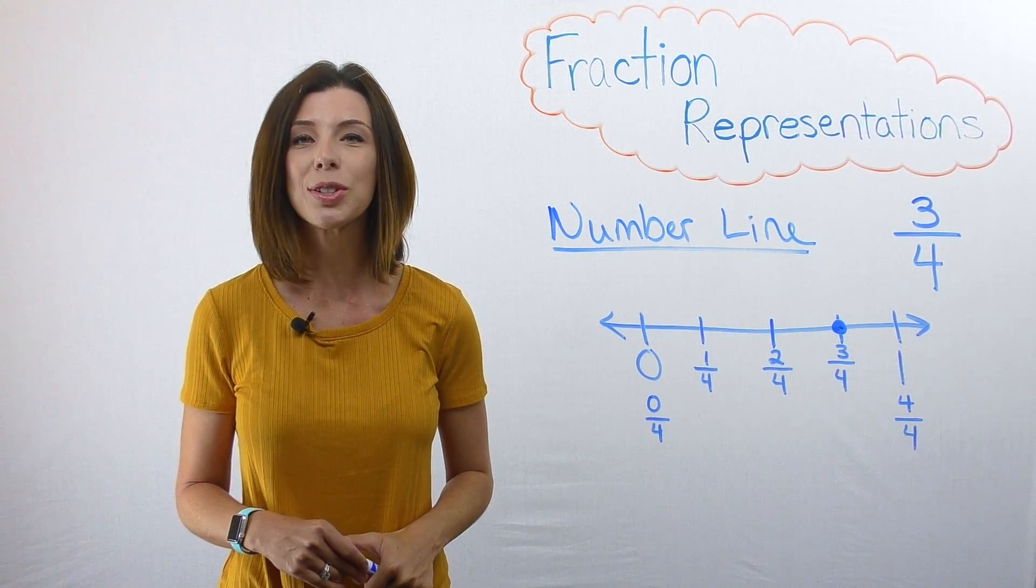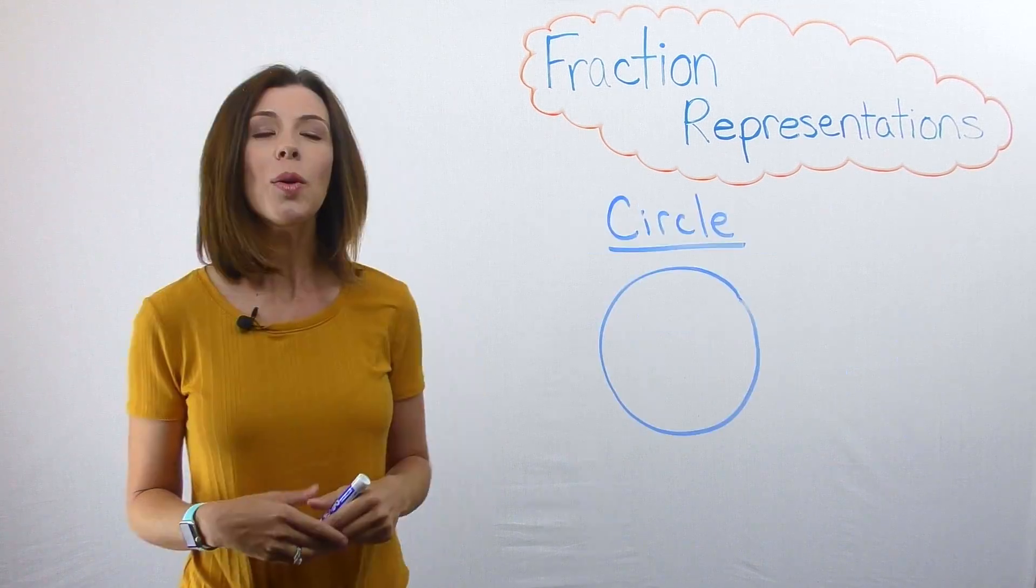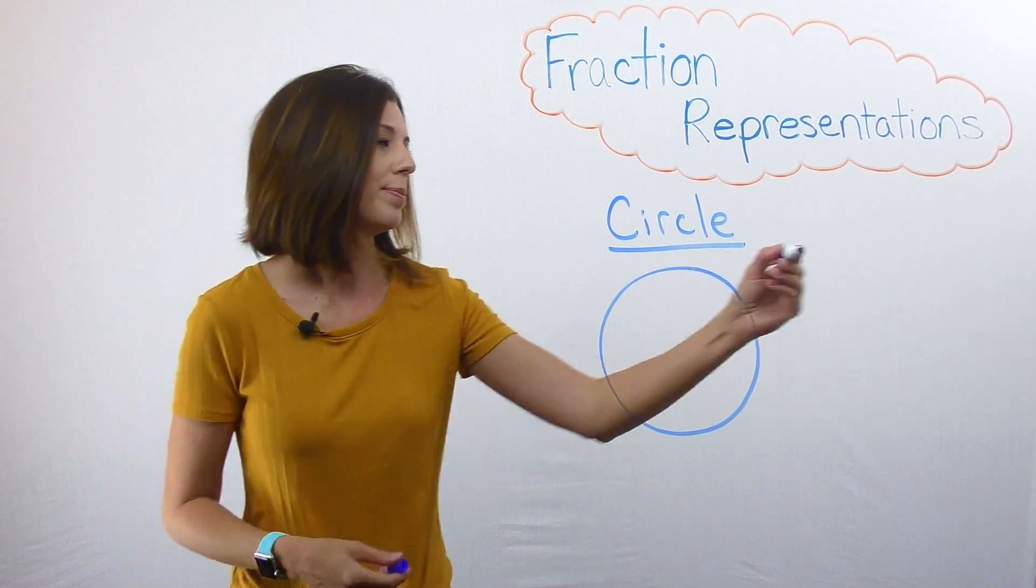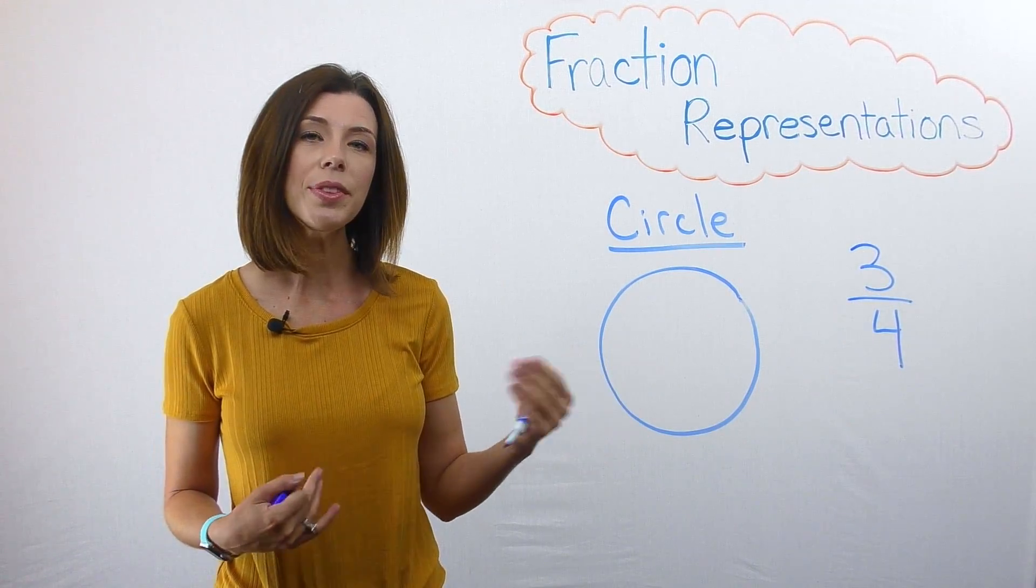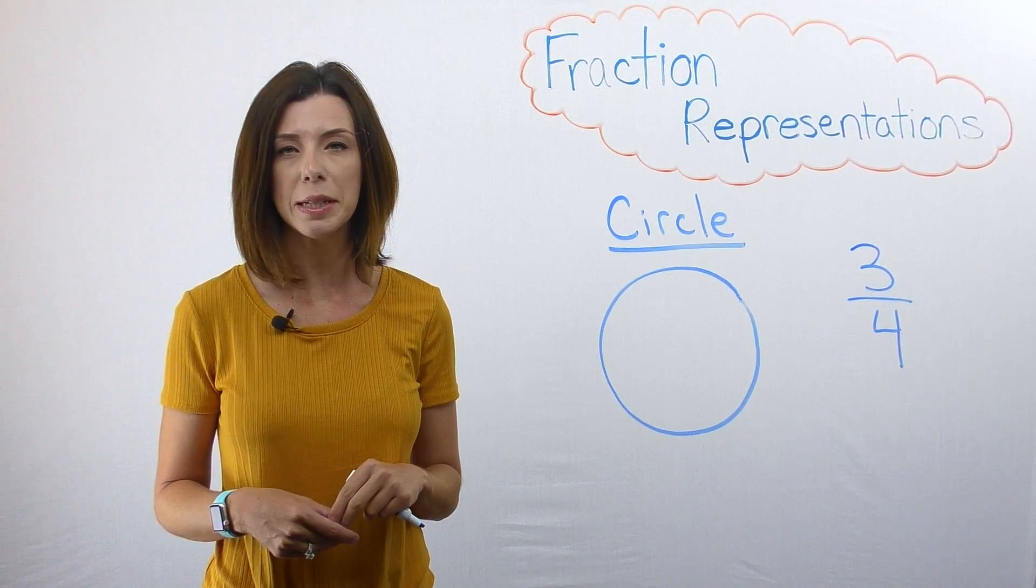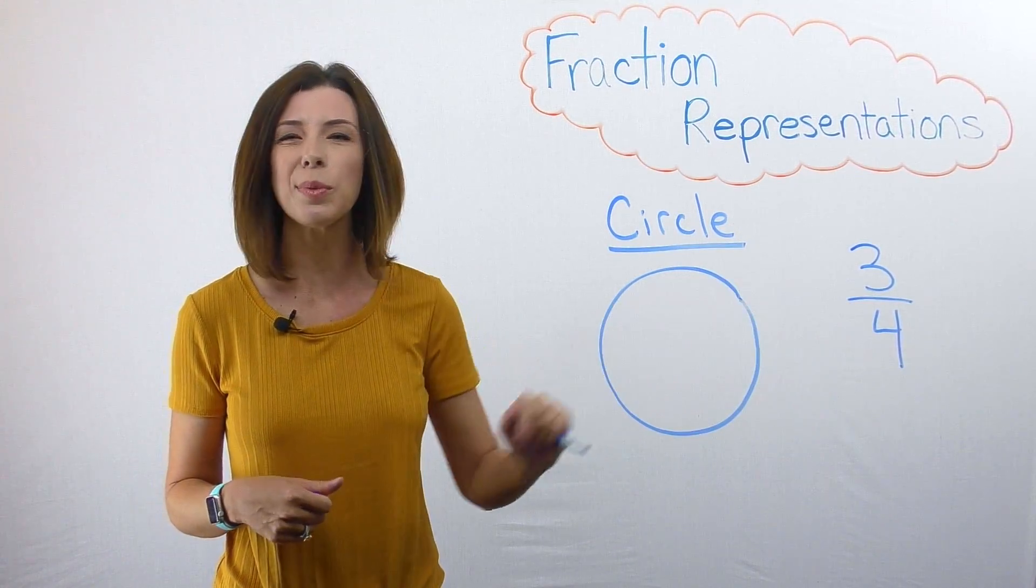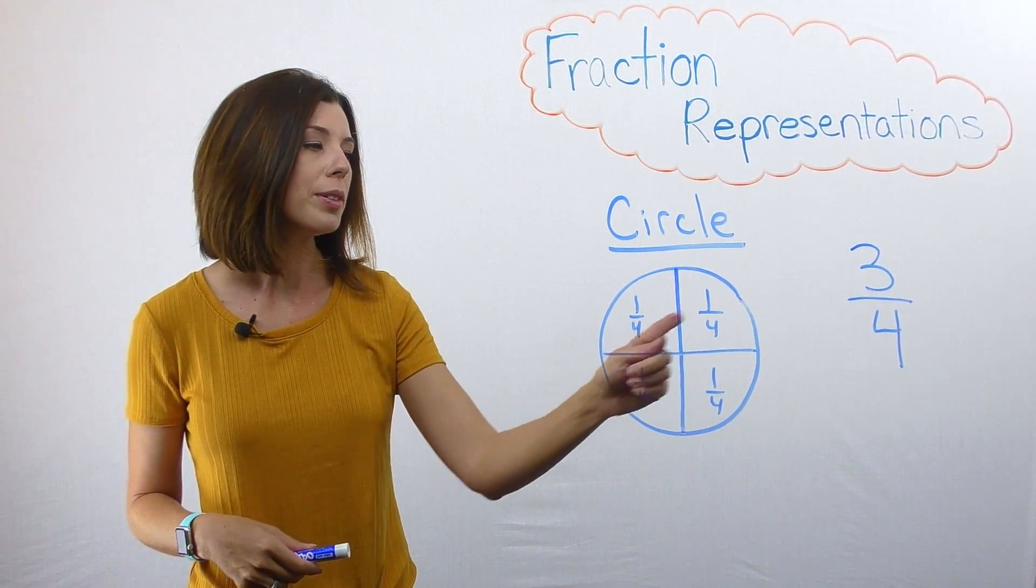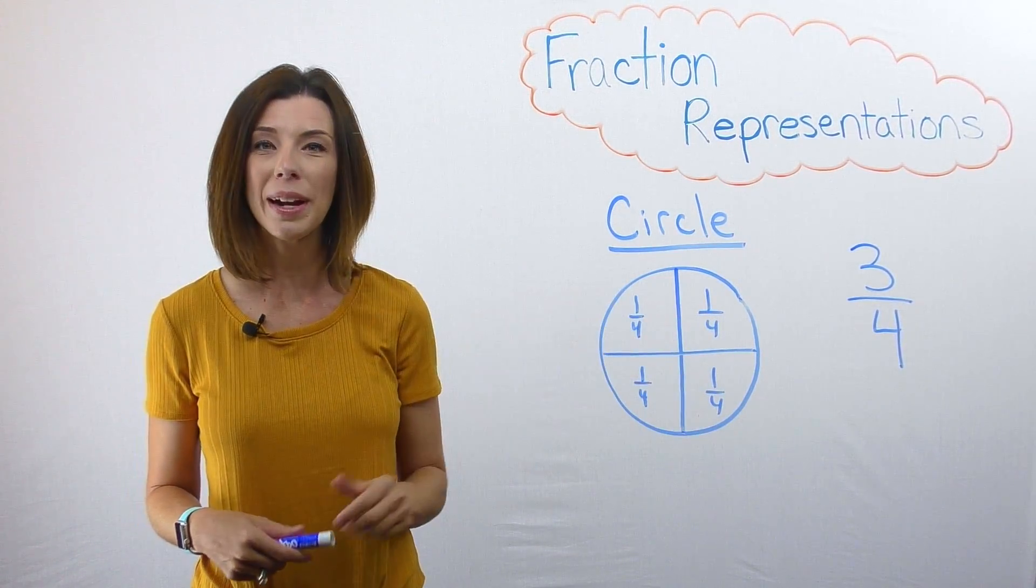Let's look at how we can use a circle to represent that same fraction. We can use a circle to represent our same fraction of 3/4. For this, just like we did with the number line, we're going to need to break our circle into four equally sized pieces. Now if you're thinking why 4, this is what our denominator is.